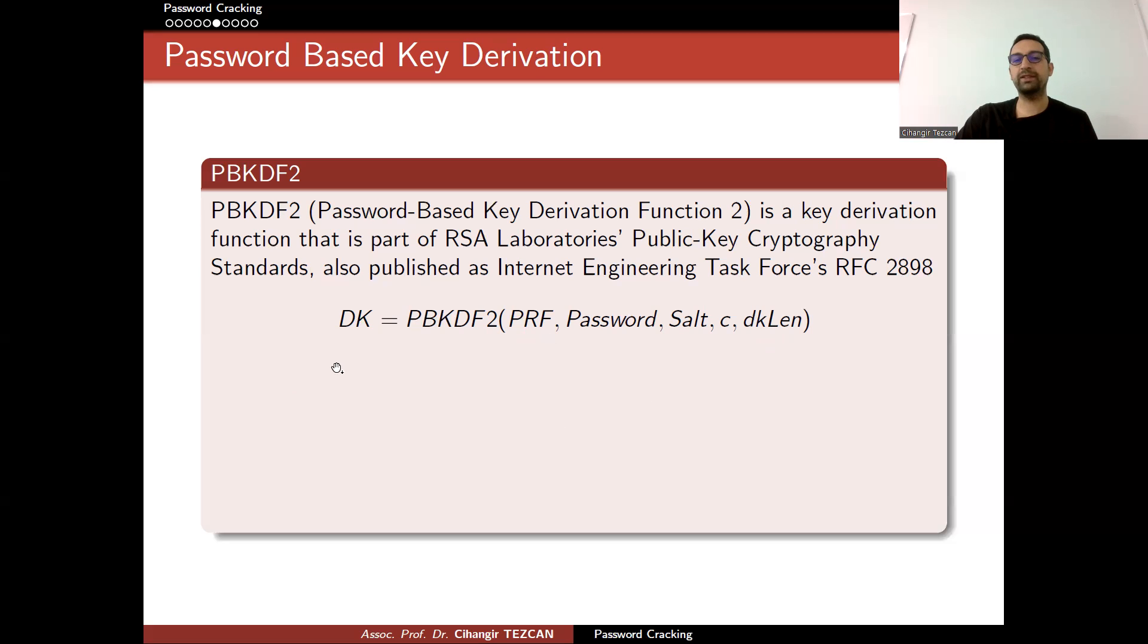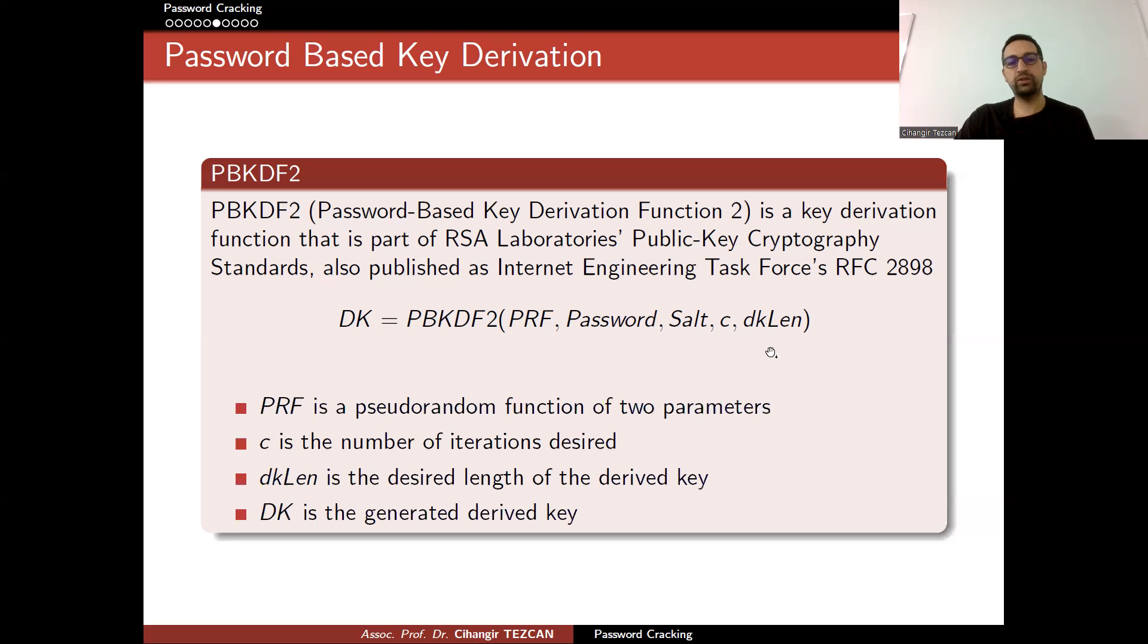This function allows you to generate anything as long as you want. For instance, if you need military-grade RSA security, you have to choose your desired secret key length larger than 15,000 bits. Here is the notation again: PRF is a pseudorandom function of two parameters - we're going to use message authentication codes. c is the number of iterations. dkLen is the desired length of the derived key. DK is the generated derived key.